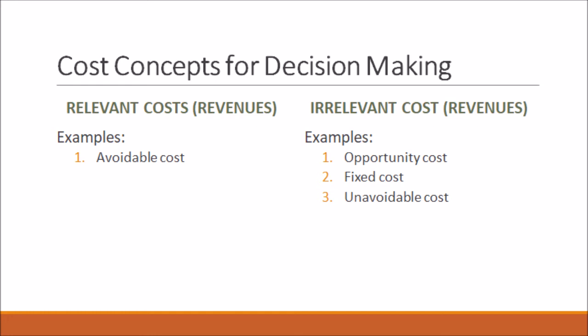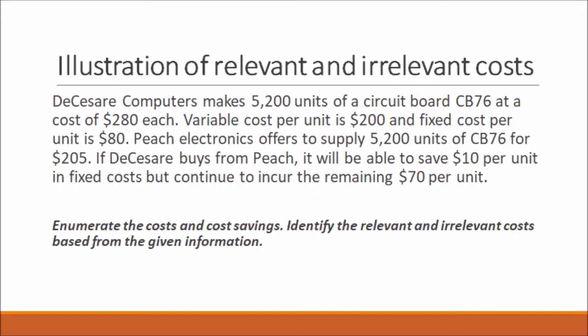Now let's illustrate relevant and irrelevant costs. Sensory Computers makes 5,200 units of a circuit board CB76 at a cost of $280 per unit — variable cost per unit is $200 and fixed cost per unit is $80. Pitch Electronics offers to supply 5,200 units of CB76 for $205. If Sensory buys from Pitch, it will save $10 per unit in fixed costs but continue to incur the remaining $70 per unit. Enumerate the costs and identify the relevant and irrelevant costs based on the given information.